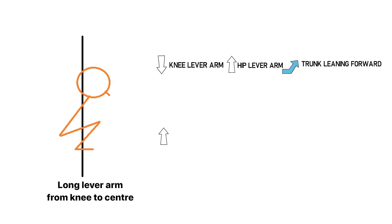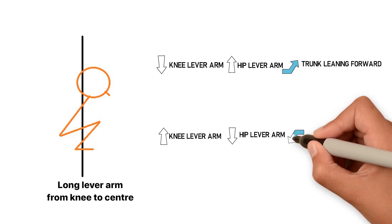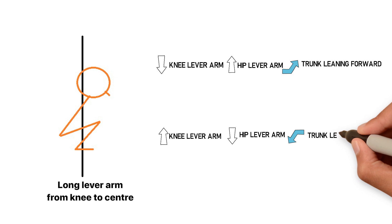Vice versa, if the lever arm of knee to center is long, it will cause a decrease in lever arm of hip to center and in turn leads to a decrease in trunk forward lean to keep balance during squat. This will then reduce the load of the back muscles, making squat more evenly spread between the back, hip and knees.